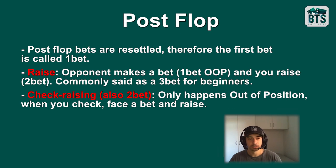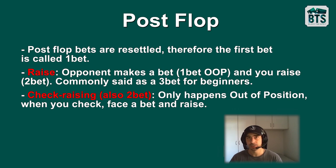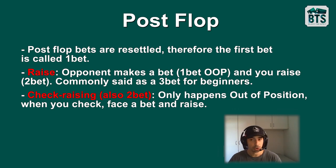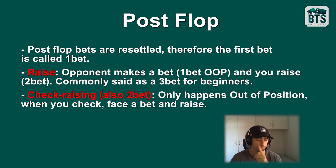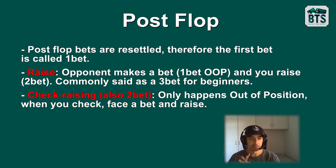Postflop, the bets are reset, so the first bet is called one-bet. When someone makes a bet, that's the first bet, and if someone raises it up, that's the second bet — the two-bet. Beginners commonly mistake this for a three-bet. For example: small blind opens, you call in the big blind, the flop comes, he c-bets (which is the first bet postflop), and then you decide to raise. That's not a three-bet even though it looks like one — it's the second bet, the two-bet.